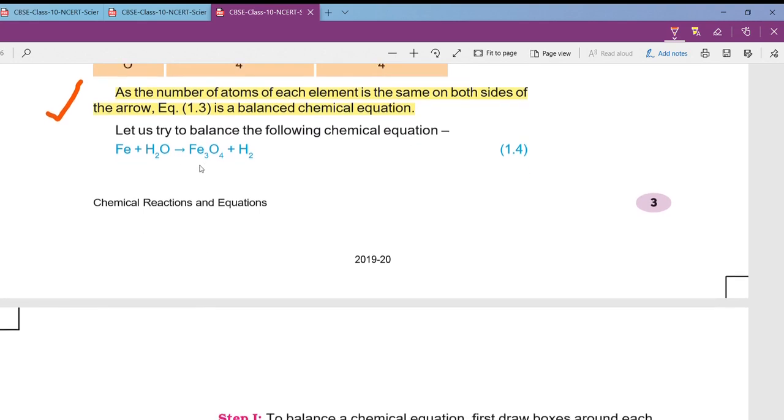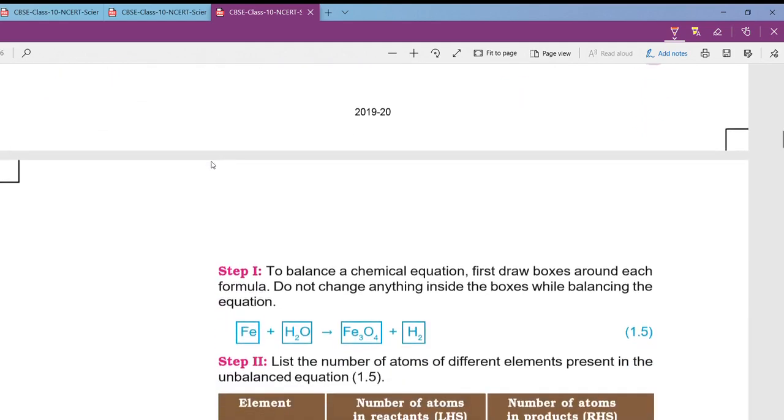Ferrous reacting with water gives rise to ferrous ferric oxide plus hydrogen gas. In this we have seen that the number of atoms of ferrous on the reactant side and number of atoms of ferrous on the product side are not equal, hence it is not balanced. Now we will study how to balance this equation.